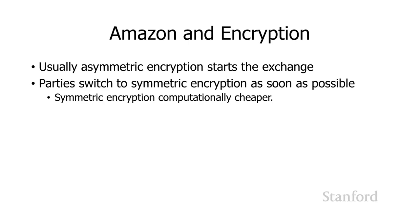Usually what happens with websites like Amazon is I'll start off with asymmetric encryption — they provide me their public key, I encrypt something and send it to them, and they're the only ones who can read it because they have the private key. But as soon as possible, we'll generate a symmetric key that only the two of us know. That's what we actually use for regular communication because symmetric encryption is computationally cheaper than asymmetric encryption, and since their web server is decrypting all these messages, anything they can do to reduce the server load is better and cheaper for them.